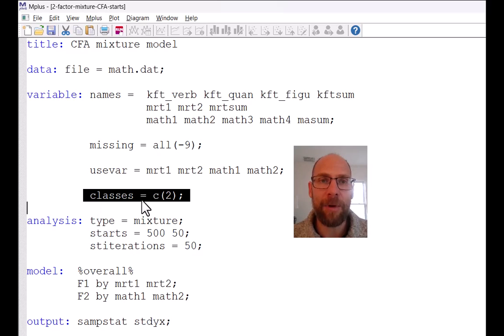And this is done with a classes subcommand. In the classes subcommand we first of all specify the name of the latent class variable. In this case I called the latent class variable C. This is the name. The name is freely chosen so to say, you can pick what you want. And then in parentheses we specify how many classes we want to extract.